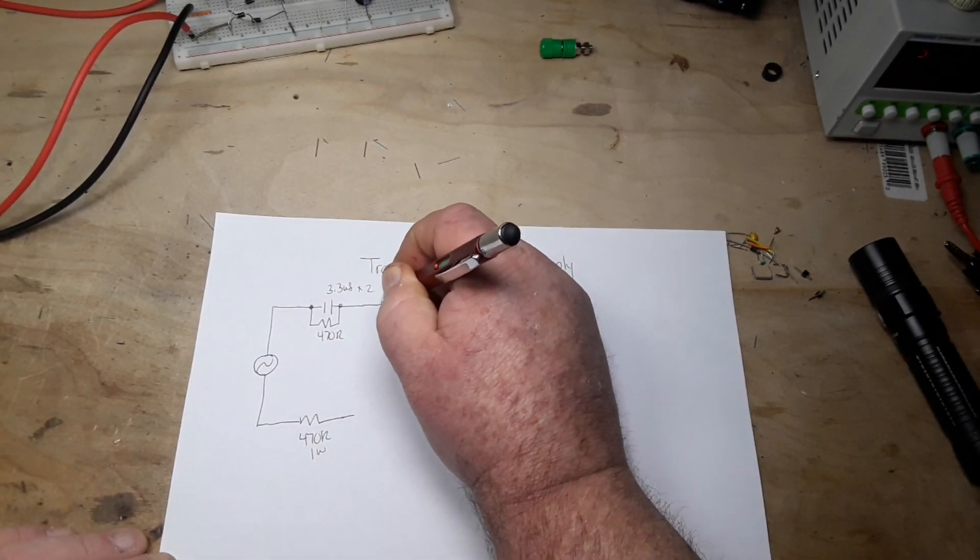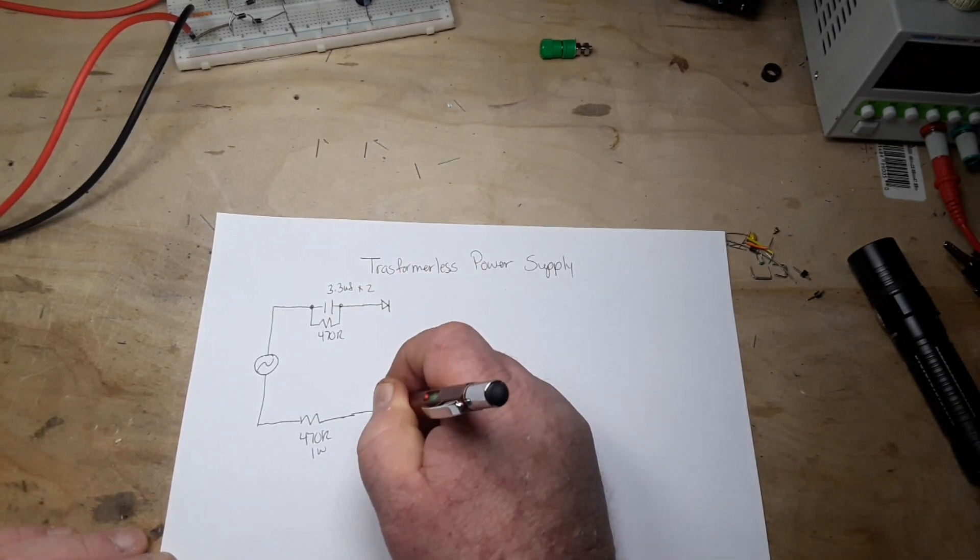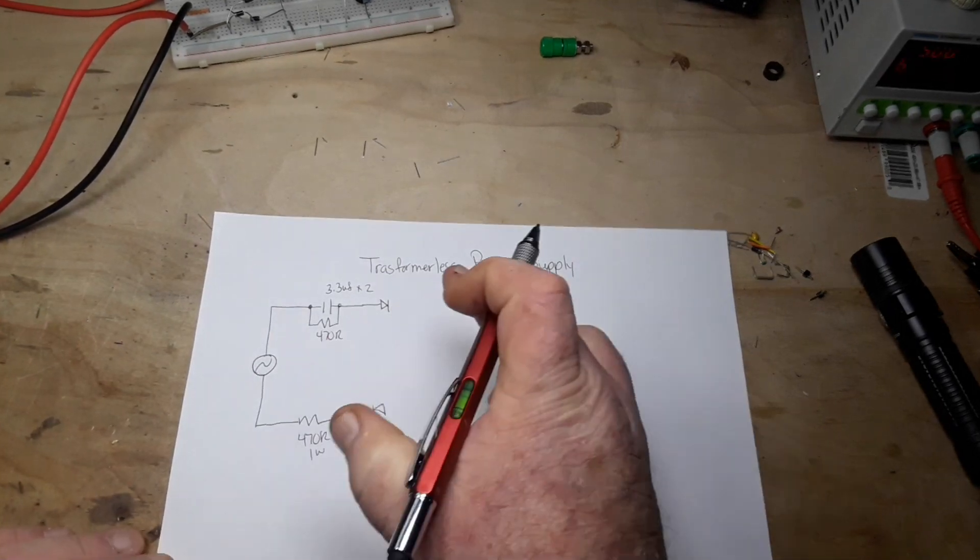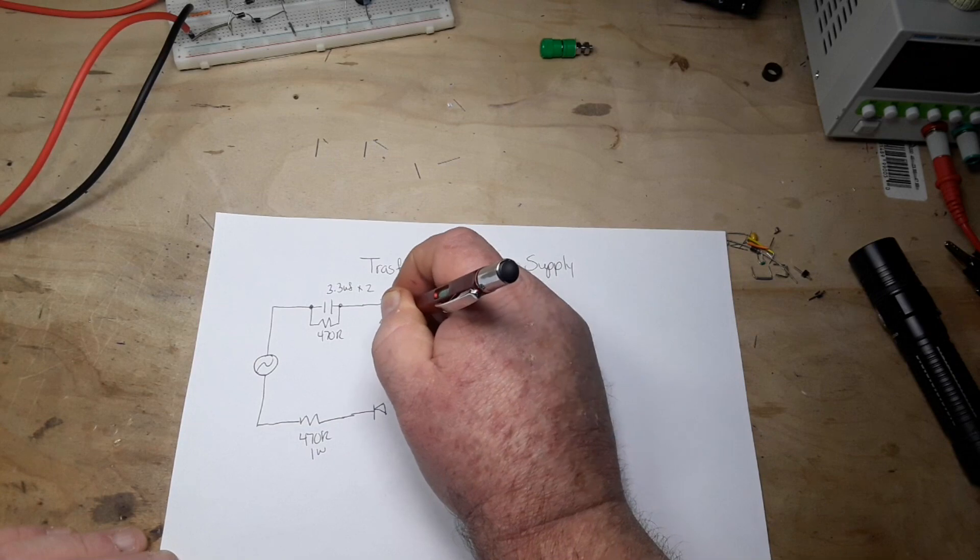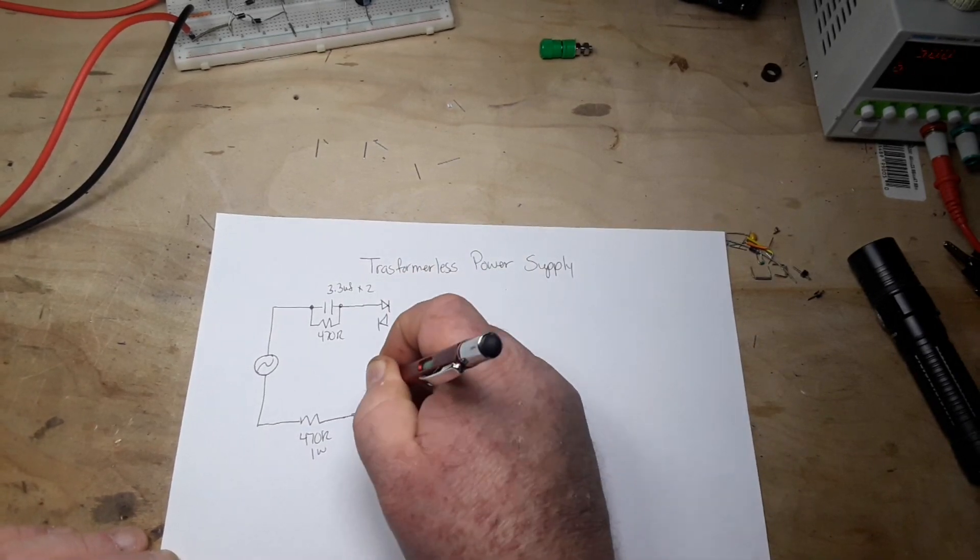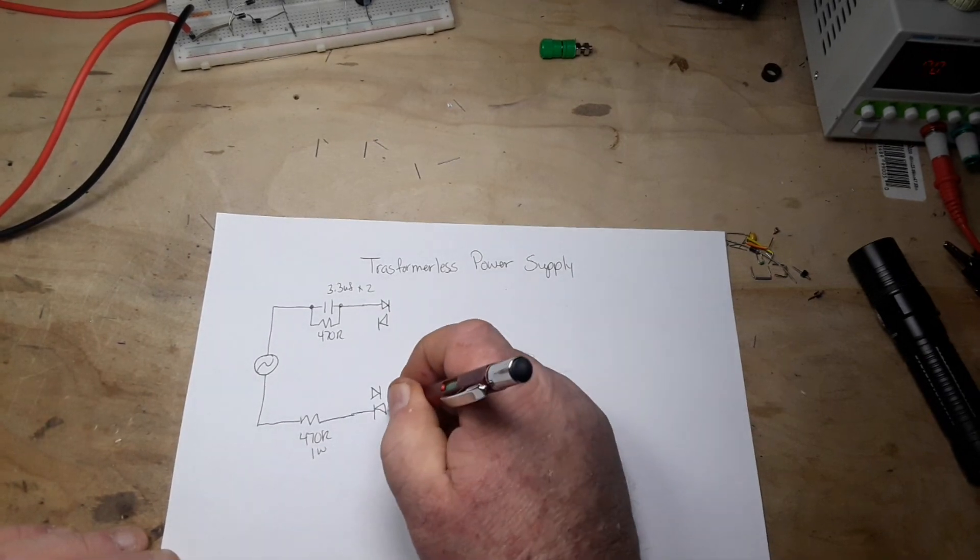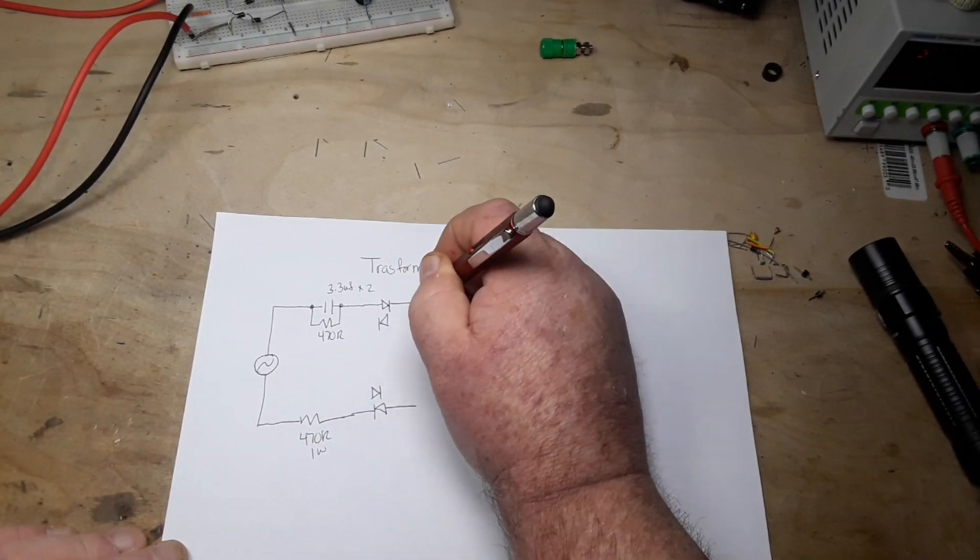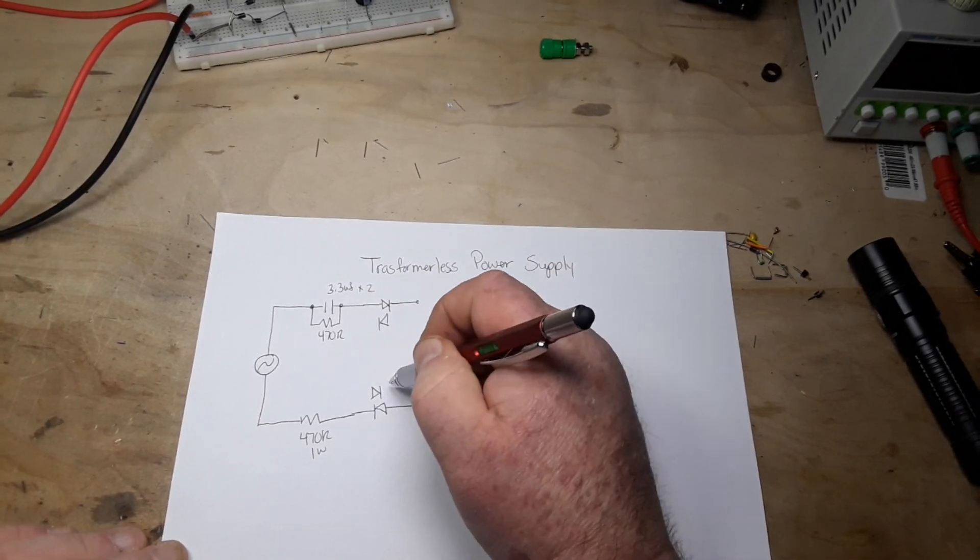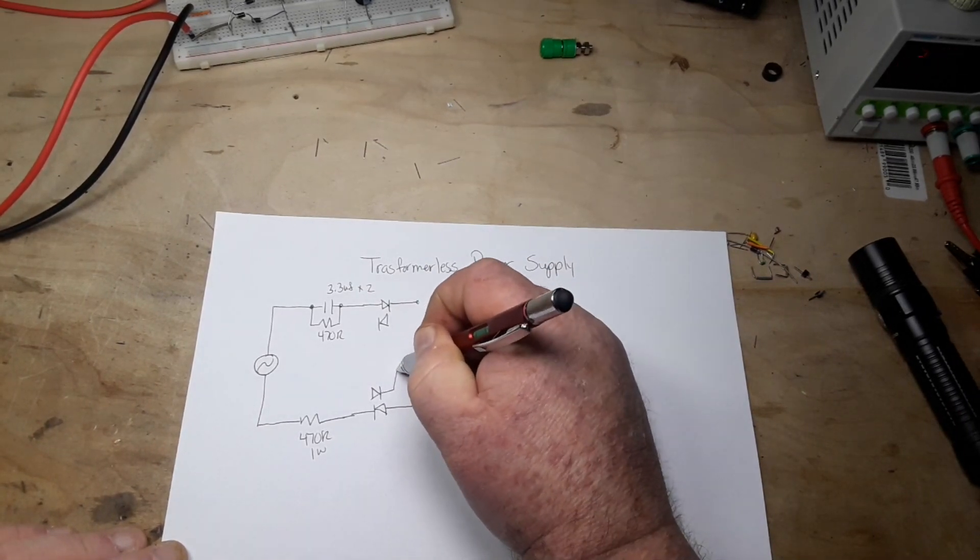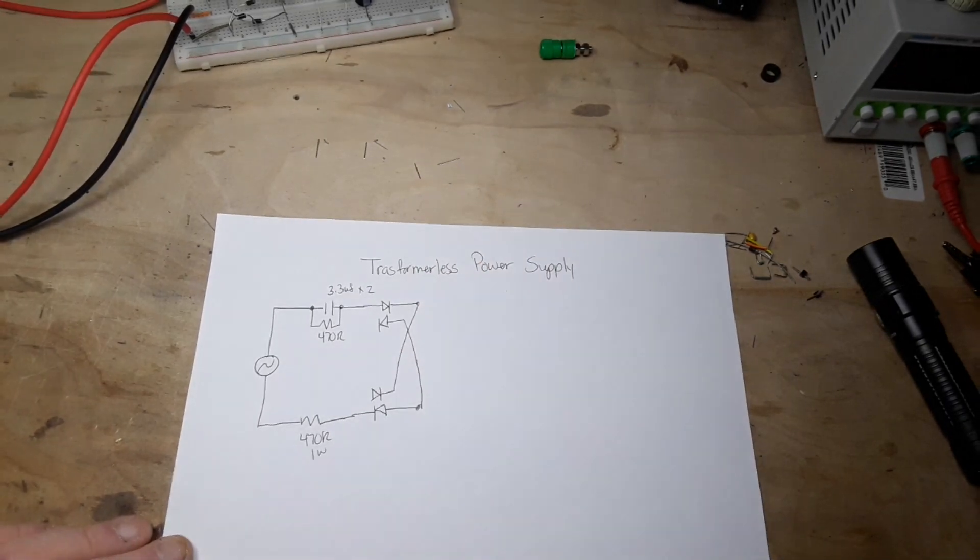We'll start with a couple diodes going in opposite directions, then we reverse that for the opposite sides. We'll take this here, goes up there, this one here goes down here. They do not touch there.